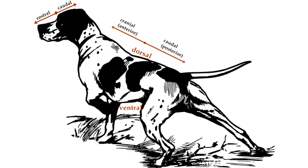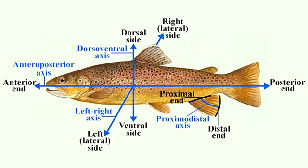The terms posterior and anterior referring to a dog's body would also correspond with caudal and cranial. Dorsal in quadrupeds or fish would refer then to the part of the body we think of as the back or top.